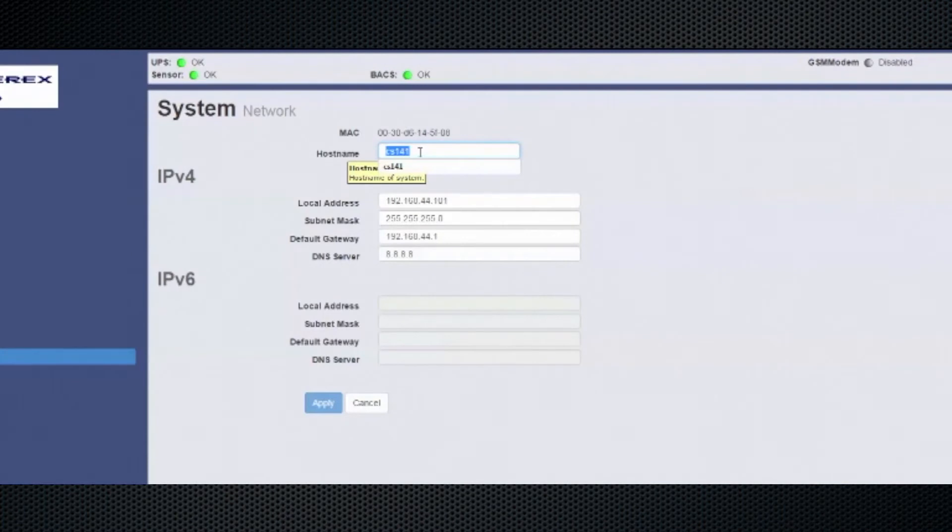On the Bax web manager you can set hostname, IP address, subnet mask, default gateway, and a DNS server if necessary. Hit apply to save any changes.